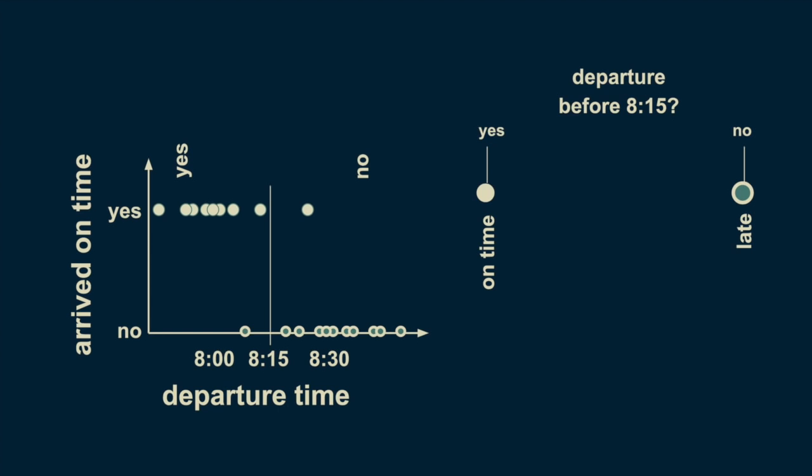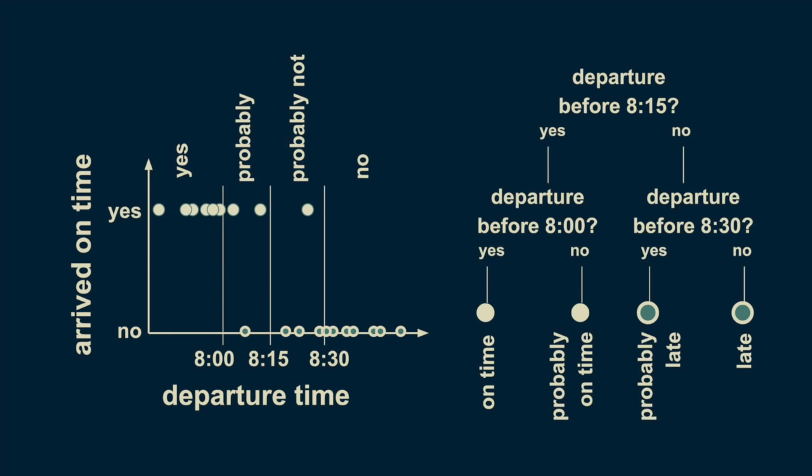We can refine our estimate of punctuality by subdividing both the before 8:15 and the after 8:15 branches. If we add additional decision boundaries at 8 o'clock and 8:30, then we can divide up our arrival estimate more fully. Those before 8 o'clock are confidently on time. Those between 8 and 8:15 are probably on time, but not guaranteed to be so.